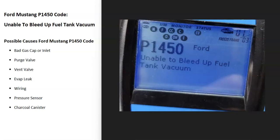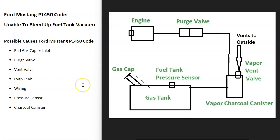Today I'm talking about a Ford Mustang with the P1450 code — what it is and how you go about fixing it. The P1450 code is an 'unable to bleed up fuel tank vacuum' code. Modern vehicles have what's called an EVAP system that takes all the gas vapors from the gas tank and feeds them up to the engine to get burnt off. This is for emissions, and the computer has seen a problem inside this system, so it will need to be troubleshot.